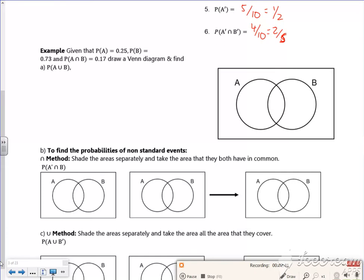So it says given that A is 0.25 and B is 0.73 and that's 0.17, fill it in. So 0.17 I definitely know is in the middle so I've done that one. Now A, the 0.25 includes this 0.17 and people forget that. So that's going to be 0.08 there. So 0.08 is A not including B.